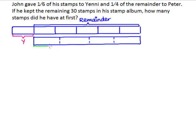Looking at the question again, we know that 1/4 of the remainder was given to Peter, and we can show that in this model.